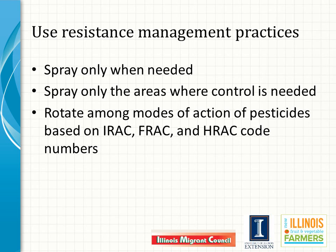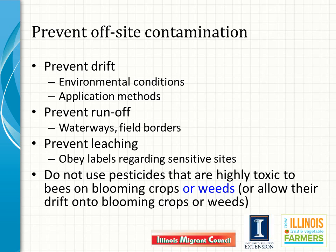Simple rules govern pesticide use. After designing a farm plan that reduces the likelihood of pest problems, spray only when needed based on results of scouting efforts. Spray only the areas where pest pressure requires it. Rotate within types of pesticides according to modes of action to slow the evolution of resistance. Never apply a pesticide in ways prohibited by the label, and especially do not use more than the label instructions allow. Do not apply pesticides in excessive winds or too close to neighboring property or sensitive crops. Manage soil erosion and do not apply pesticides to waterways or field borders. Where labels restrict use to protect shallow water supplies, always obey the label. And do not apply pesticides in ways that will poison bees or other pollinators.